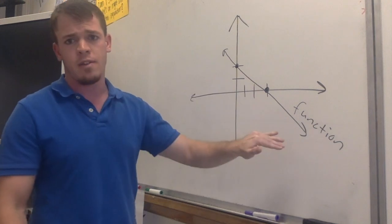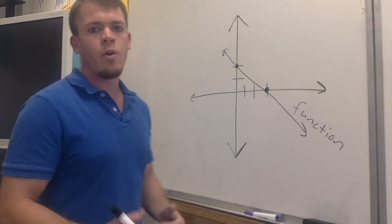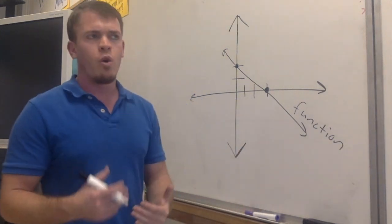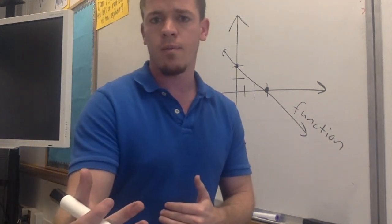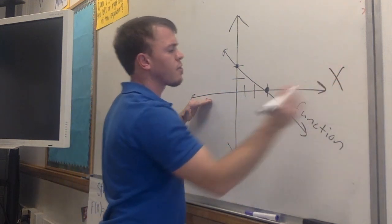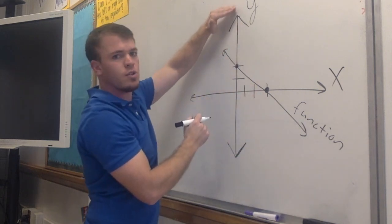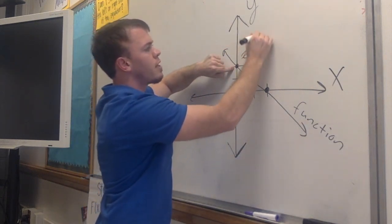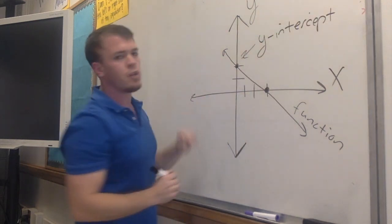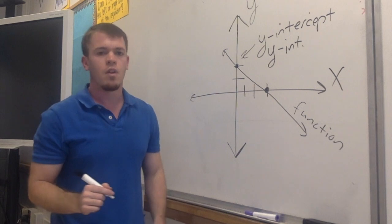Imagine that I'm an artist — that's supposed to be a straight line, but right here we have two points. Which one do you think is the y-intercept? We said the y-intercept is where we cross the y-axis. Right here we have our x-axis, right here we have our y-axis, and because this line is crossing our y-axis right here, we know this is our y-intercept.